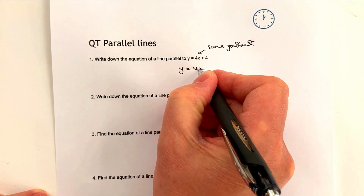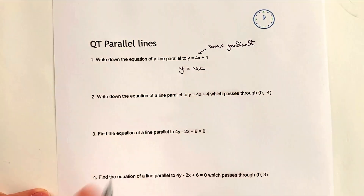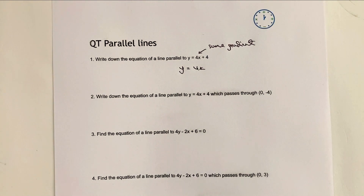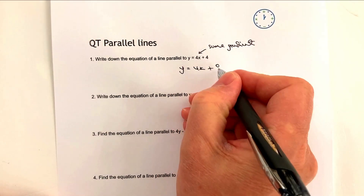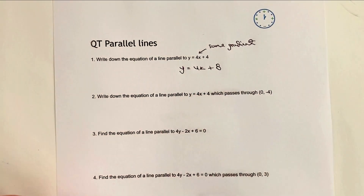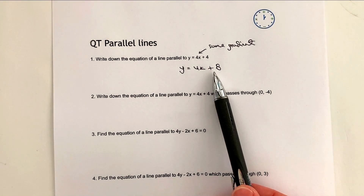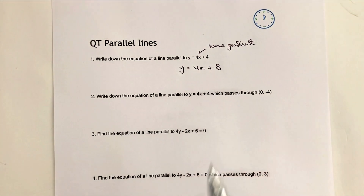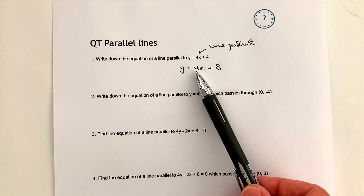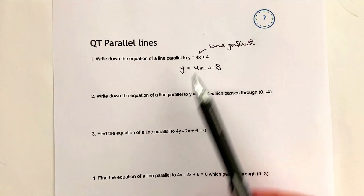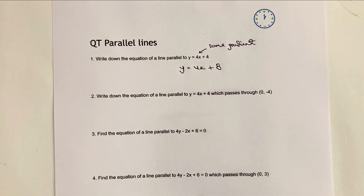...and then you can have plus anything you like, so it could be plus 8 or minus 200 — it doesn't really matter, because this is effectively the y-intercept. The gradient is the same, it's parallel to this particular line, and the rest of it doesn't really matter what you write down.